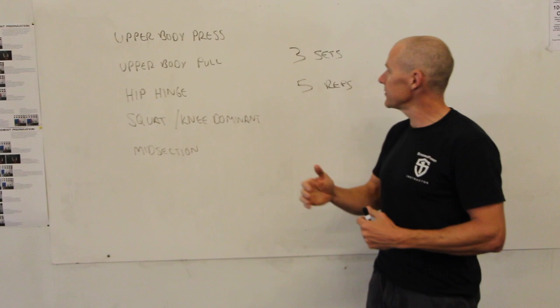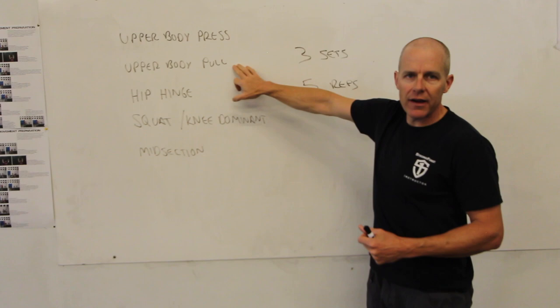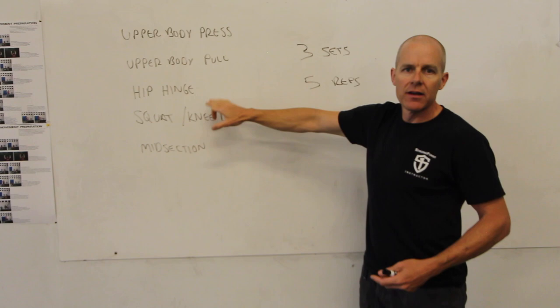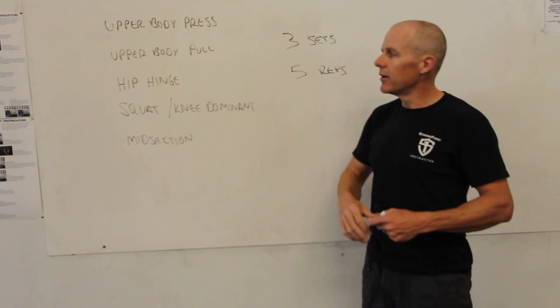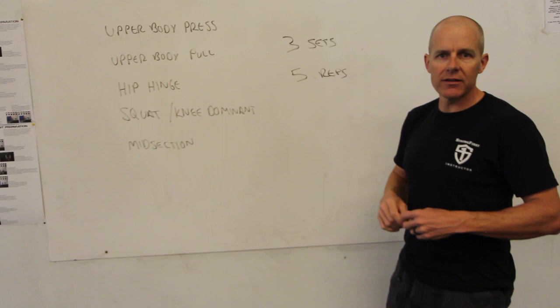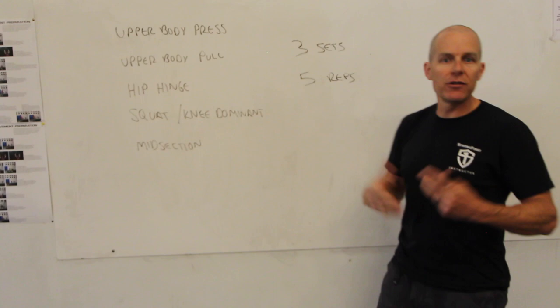So you do three sets of five of, say, a bench press. Three sets of five pull-ups—you can add load or reduce load based on your strength. Hip hinge, three sets of five deadlifts. Squat or knee dominant stuff, three sets of five front squats. And then three sets of five of difficult core variations such as an ab wheel or a straight leg raise, something that's going to challenge you. Again, just getting your abs pumped isn't actually going to improve your ability to function.